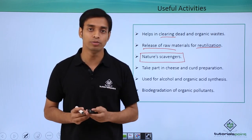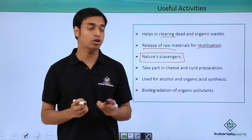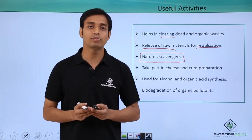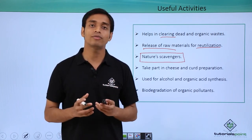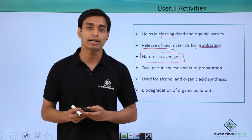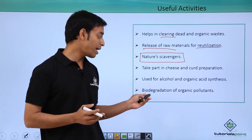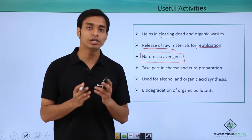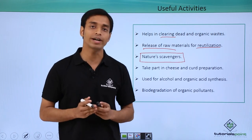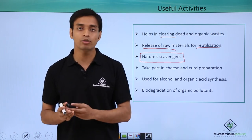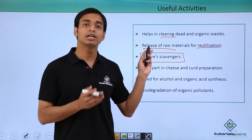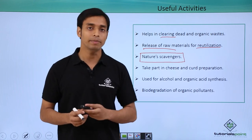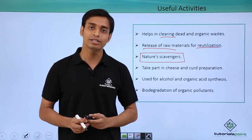For example, when oil spillage occurs in oceans, a bacterium known as Pseudomonas can clear these spillages and organic pollutants from the oceans. Due to such spillages there is death of a large number of aquatic animals and plants, so biodegradation by saprophytic bacteria is vital. In this video we have discussed saprophytic nutrition and the harmful and useful activities of saprophytic bacteria.